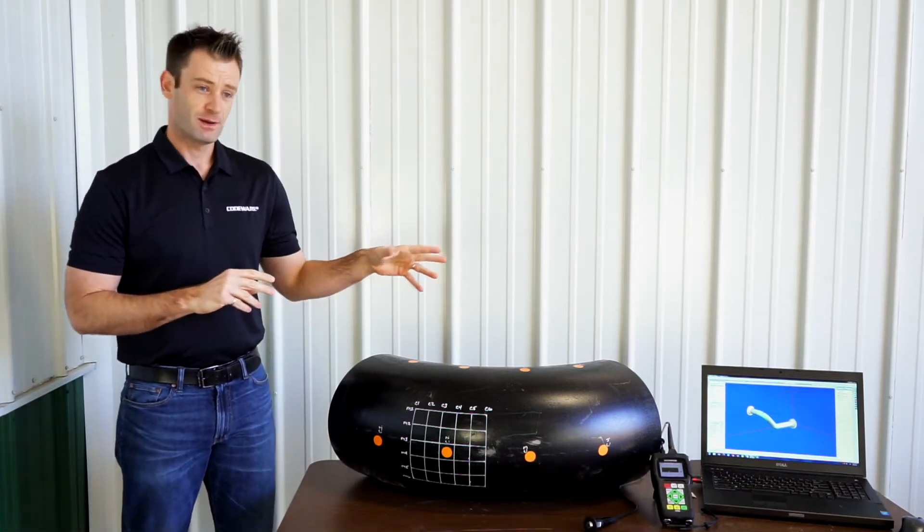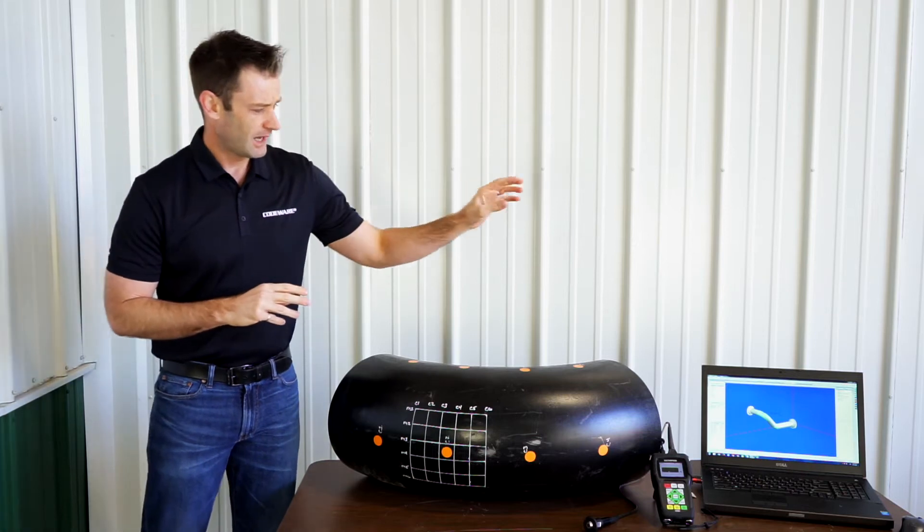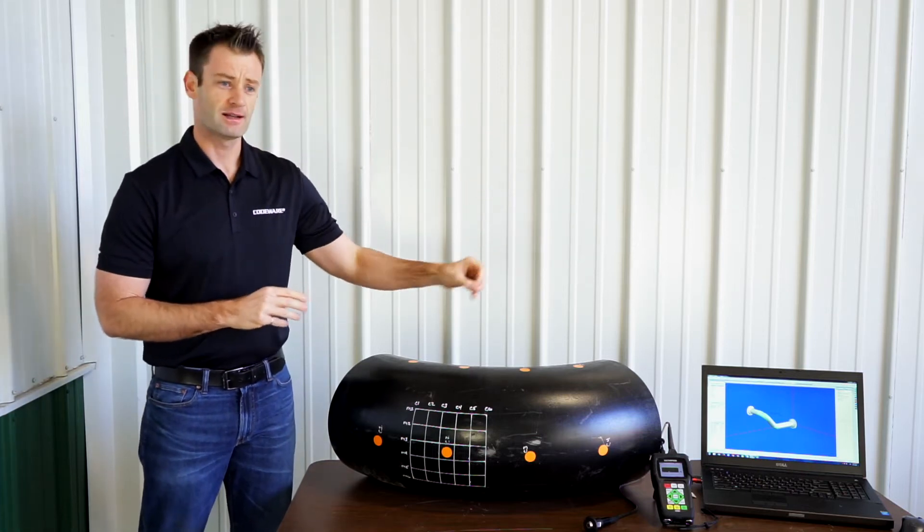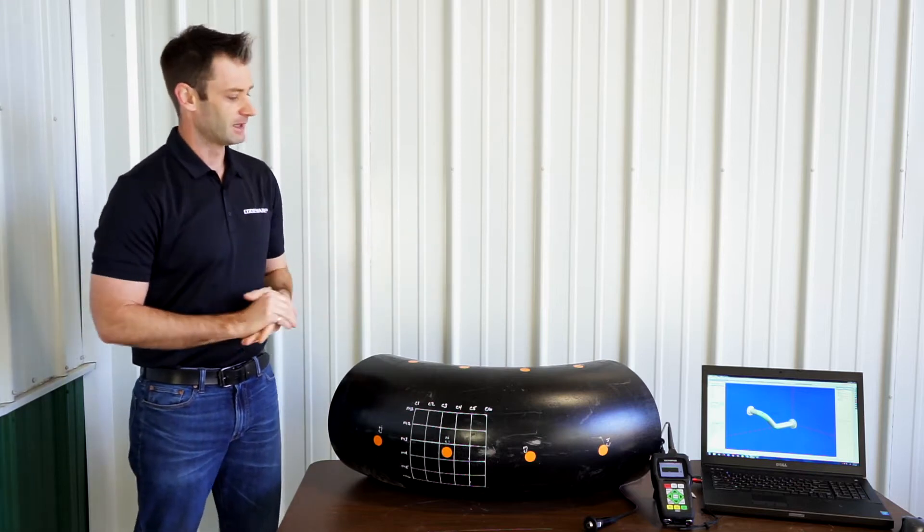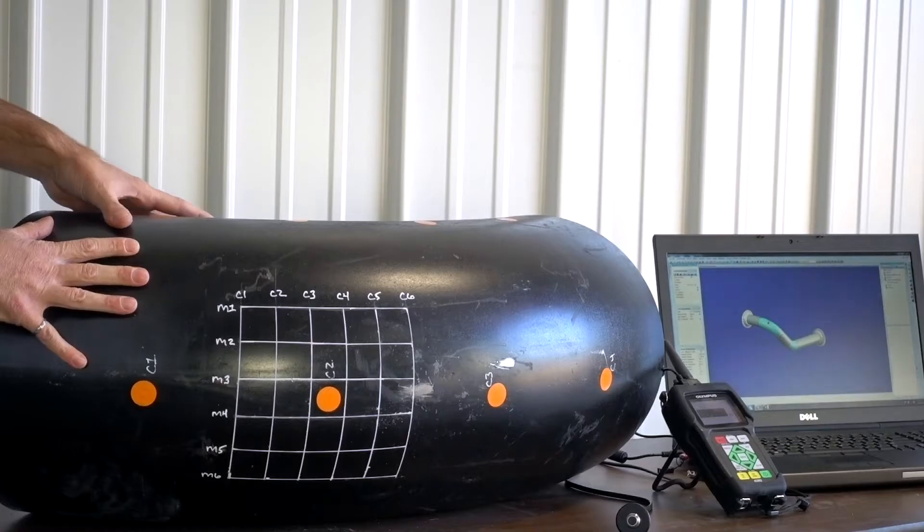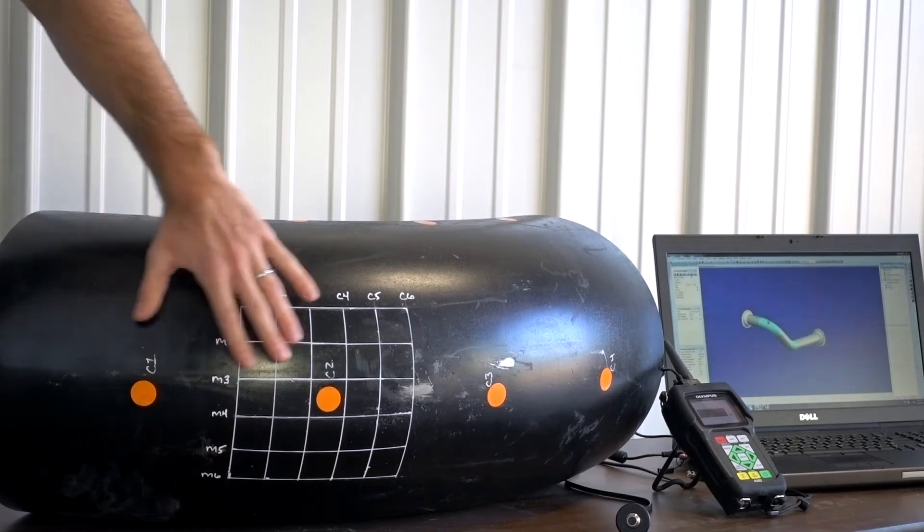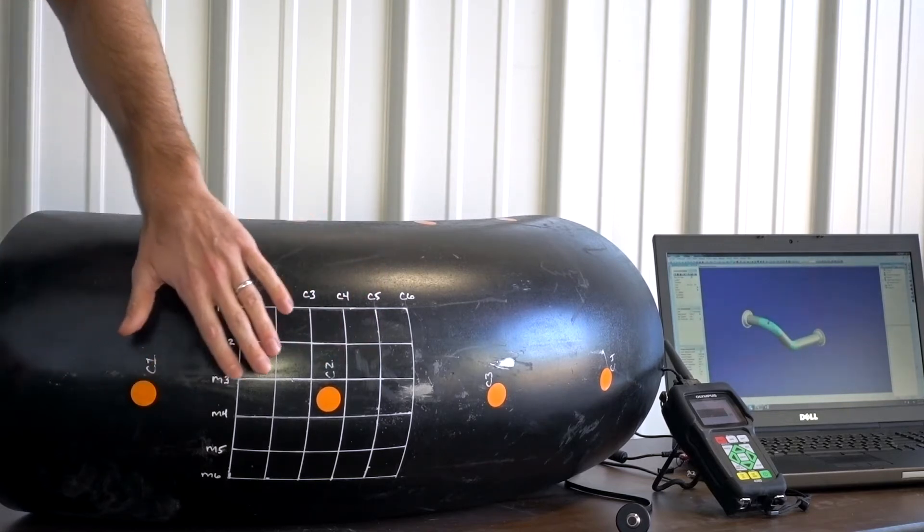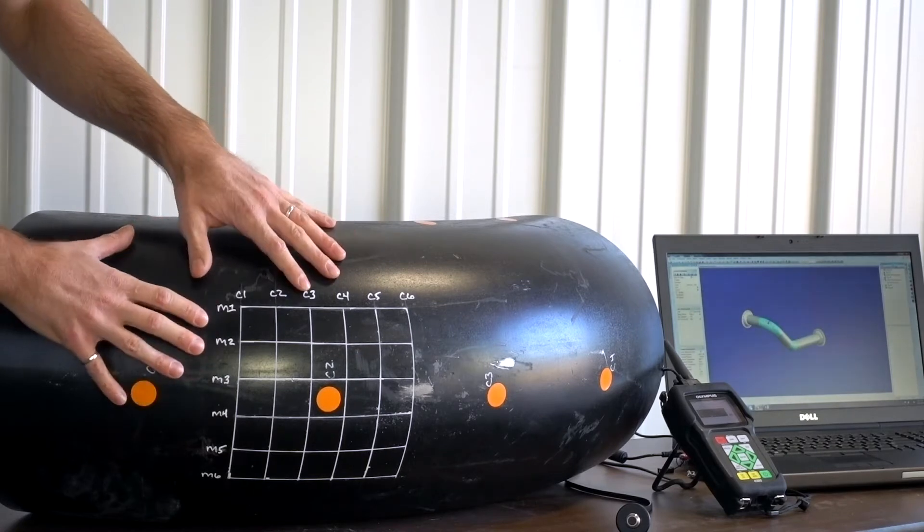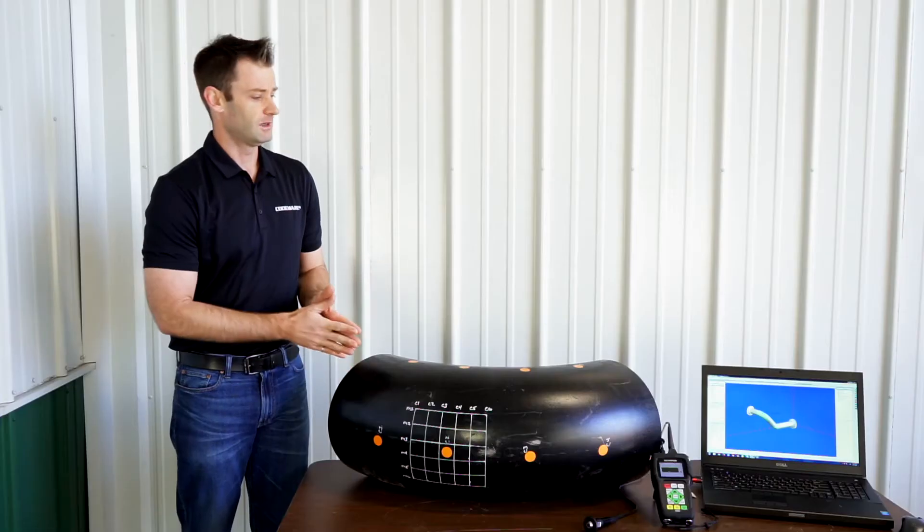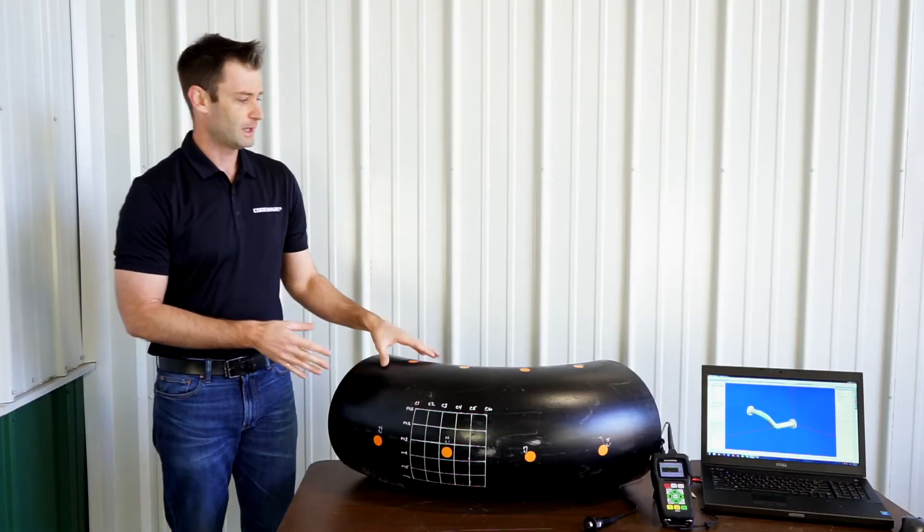We're going to be looking at our product inspect and how we can take our models from inspect, give them to your field inspectors, collect data and bring it back. I've got this 12 inch standard schedule elbow that we simulated. You can see here these orange dots are going to be our CMLs and I've got our thickness grid because we're going to be performing a fitness for service assessment on this pipe run.